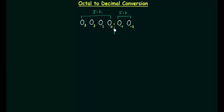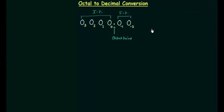This is the octal point, and this point is the reference point. When we move from right to left we will have 0, 1, 2, 3 and so on as the positions. And when we move from left to right we will have minus 1, minus 2 and so on as the positions.